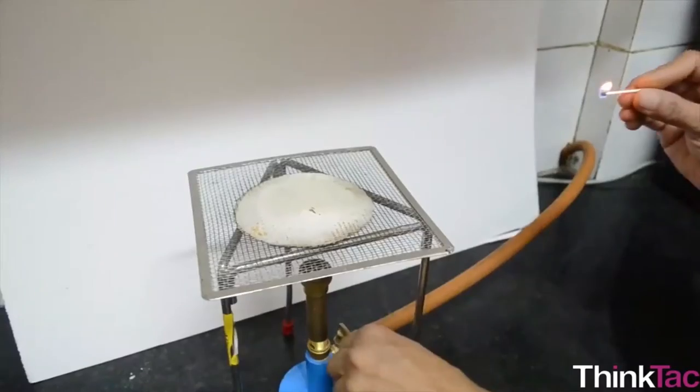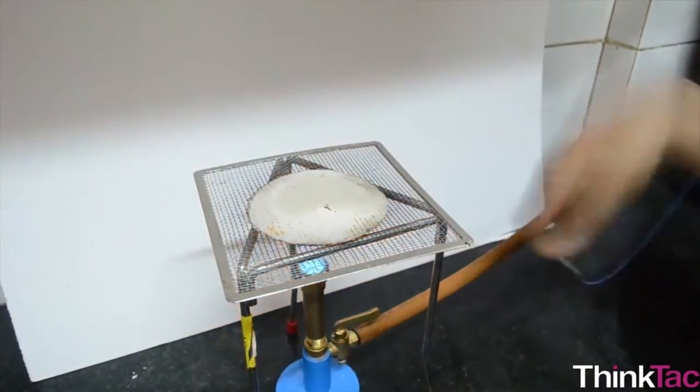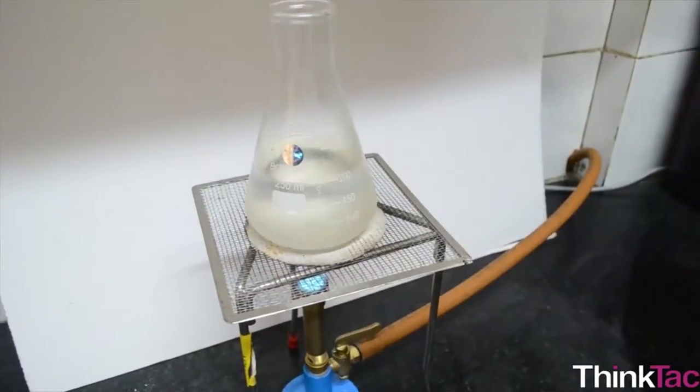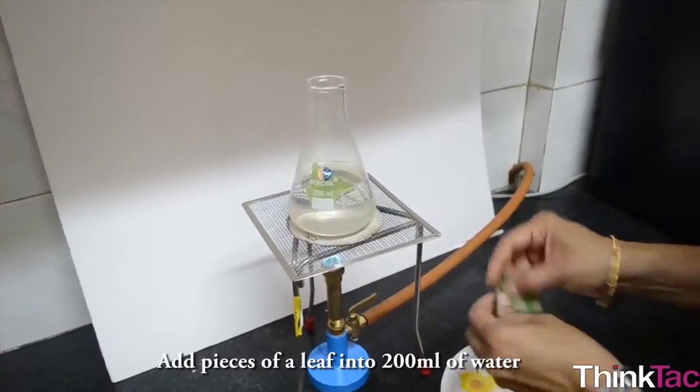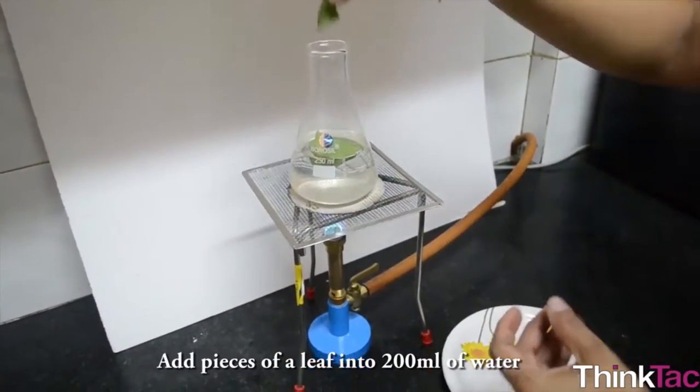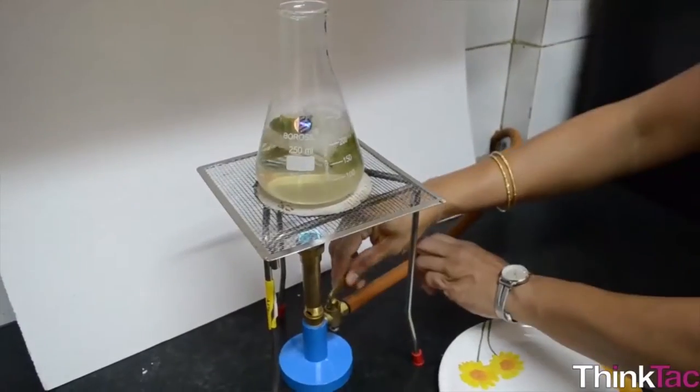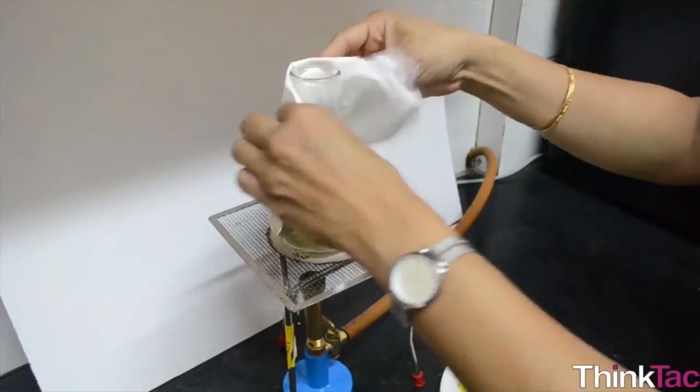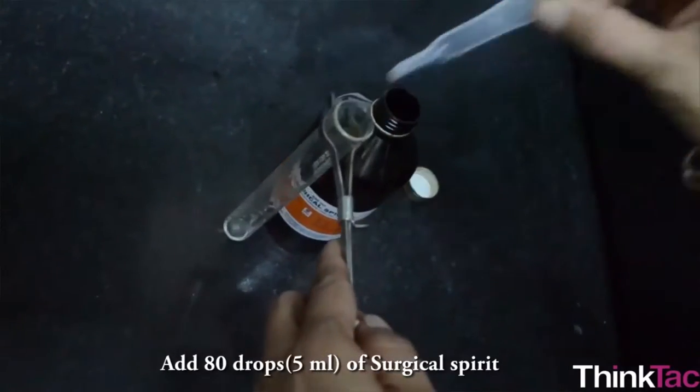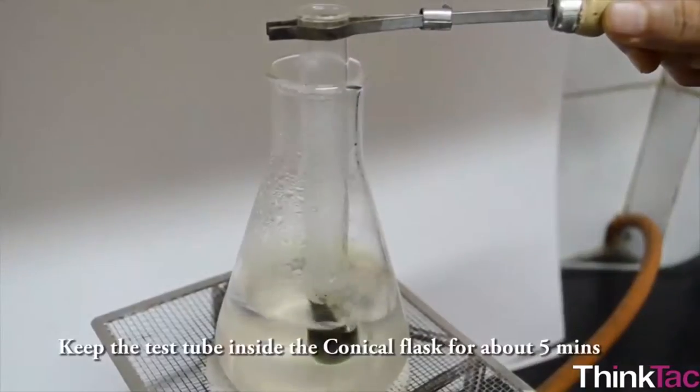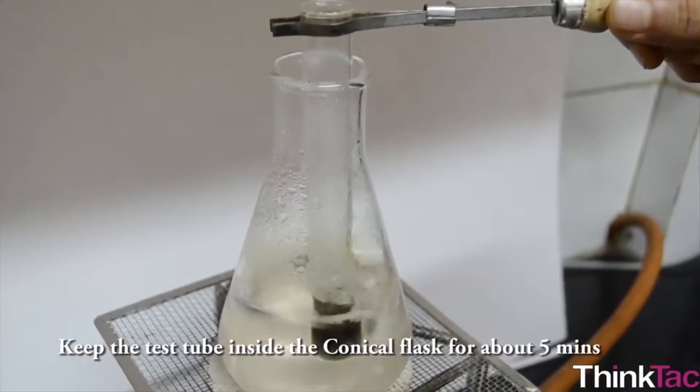This experiment might seem a little difficult, but this is a very nice one to put up in a science fair in your school or easy enough to do even at your home. But you're advised to take the help of an adult during parts of the activity. This includes heating and boiling the leaves and the use of an alcohol, in this case propanol. The test tube and the fire should be handled with care as well.